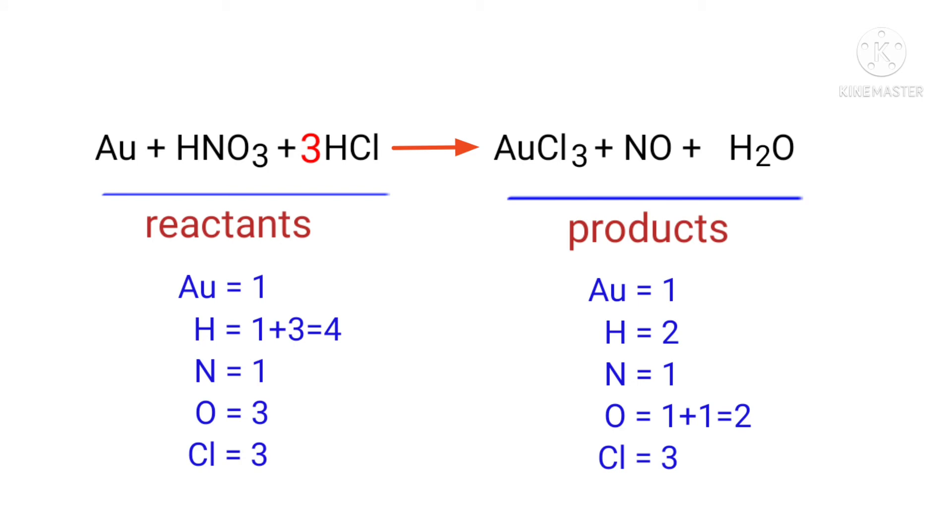Now we need to balance the hydrogen and oxygen atoms. To do this we need to put a coefficient of 2 in front of H2O. The equation is now balanced.